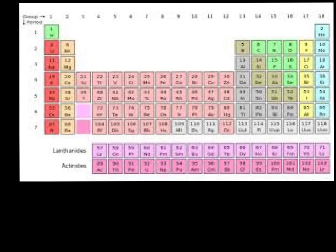The period number tells us how many energy levels the elements have in that period. So in period 1, hydrogen and helium only have one energy level. And hydrogen has one energy level and one valence electron. Helium has one energy level and two valence electrons.